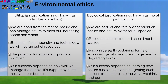There are two types of justifications. One is utilitarian justification, also known as individualistic ethics, and the second is ecological justification, known as moral justification. What is the difference between them? First, utilitarian justification: people believe we are apart from the rest of nature and can manage nature to meet our increasing needs and wants.